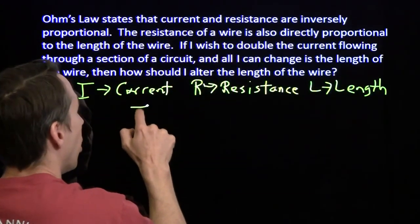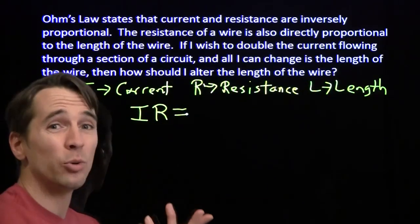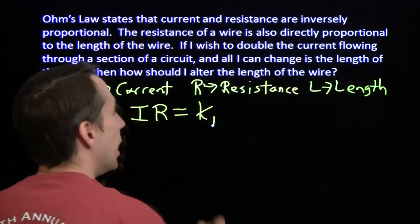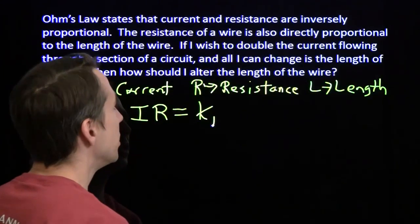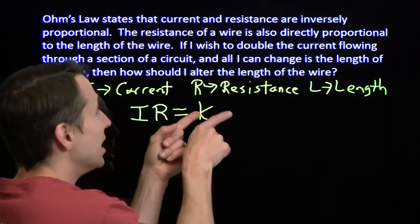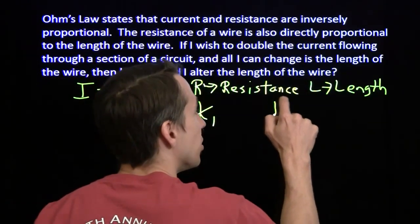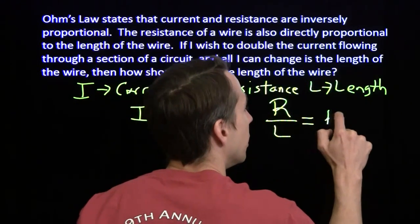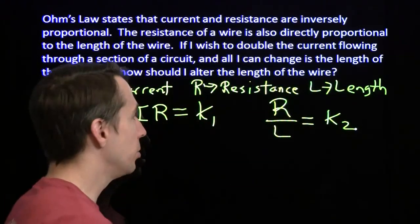We know that the length and the resistance are directly proportional and the current and resistance are inversely proportional. We'll start with that. Current and resistance are inversely proportional, so I times R equals some constant. I'm going to use the variable K with a subscript because we're going to need a second constant. That's our first constant, K1. We're going to need another constant for the fact that the resistance and the length are directly proportional. That tells us that the ratio of the resistance and the length is some other constant. That's what direct proportionality means.